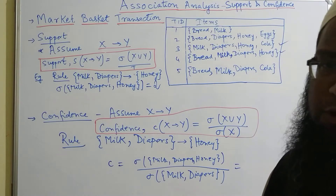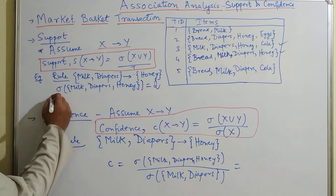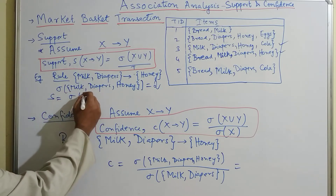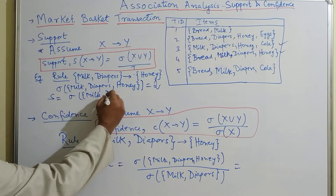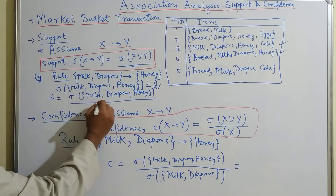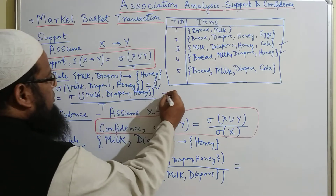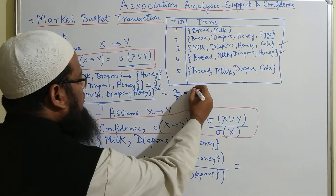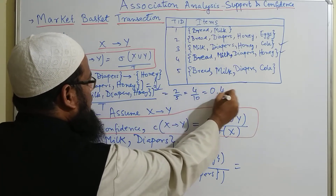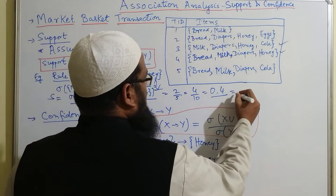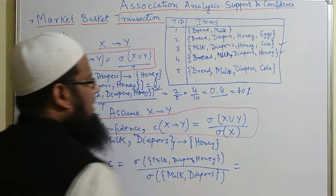So what is the support for this? Support S is equal to Sigma of milk, diapers and honey divided by the total transactions. That is equal to 2. The total number of transactions is 5, so that is 2 by 5, which equals 0.4 — or if you convert into percentage, that comes out around 40%. That is the support.